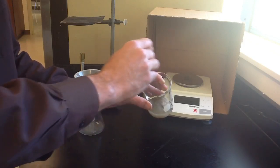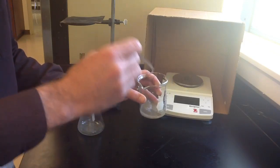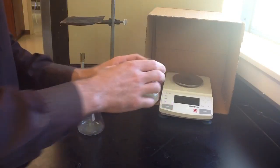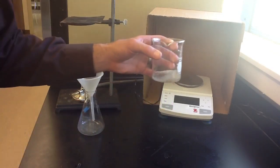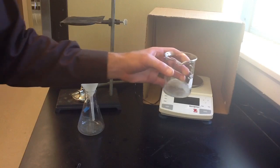So to separate a mixture, you use differences in physical properties. And the physical property we're using right here is solubility in water. Salt will dissolve in water pretty easily and sand does not.